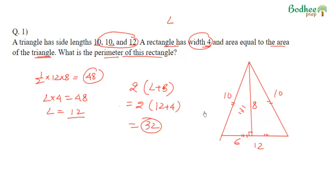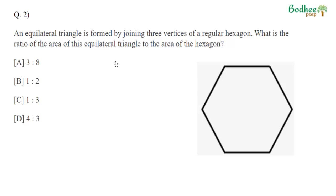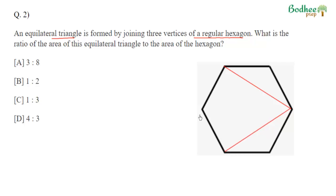It's a very easy question — anyone can solve it, it won't take more than a minute. Now let's take the next question. An equilateral triangle is formed by joining three vertices of a regular hexagon. I have already drawn a regular hexagon here. To find the equilateral triangle, we take alternate vertices and join them — ignoring one vertex and joining the next, and so on — creating the equilateral triangle.